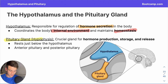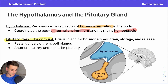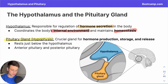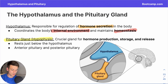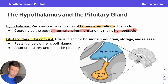Moving on to the pituitary gland, also referred to as the hypophysis — this is an extension off of the hypothalamus, and it can be broken down into two main parts: the anterior and posterior pituitary gland. Each is formed of different materials. One is composed of neural tissue and the other of glandular tissue, with this differentiation providing a wonderful degree of separation of responsibility.